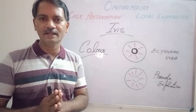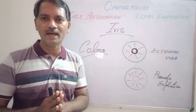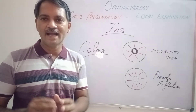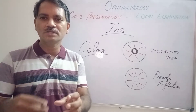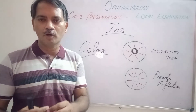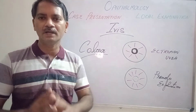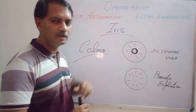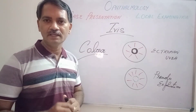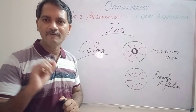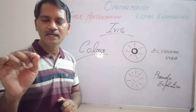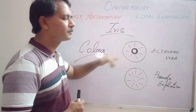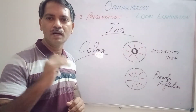Usually ectropion uvea is a congenital one where there is dysgenesis of the anterior chamber — the anterior chamber has not developed properly due to some congenital problem. If you happen to see ectropion uvea, naturally there is maldevelopment of the angle of the anterior chamber, and these people are prone for glaucoma.